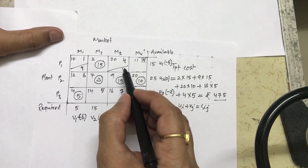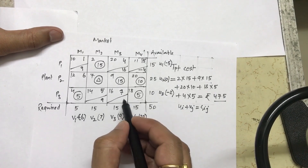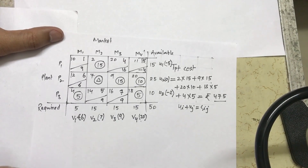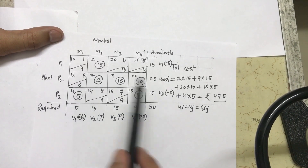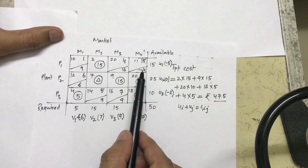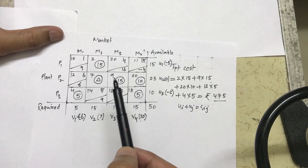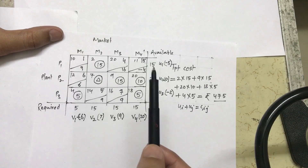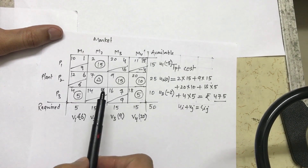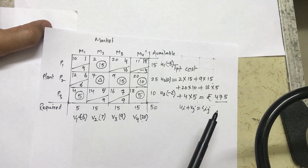These ui plus vj values are then subtracted from the actual costs to get the dij values, which determine whether the solution is optimal. The values are: 10 minus 1 is 9; 20 minus 4 is 16; 11 minus 15 is minus 4; 14 minus 5 is 9; 16 minus 7 is 9; and 12 minus 6 is 6. If all dij values are greater than or equal to 0, the solution is optimal. Here I'm getting minus 4, so the solution is not optimal. In the next video I will cover the Modified Distribution Method to find a better solution.